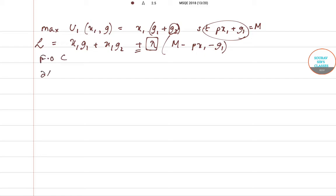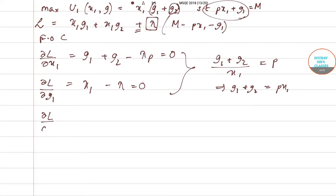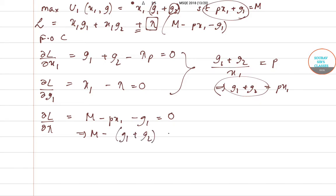The first order conditions are: ∂L/∂X1 = G1 + G2 − λP = 0, and ∂L/∂G1 = X1 − λ = 0. On simultaneously solving these two equations we get (G1 + G2)/X1 = P, so G1 + G2 = P·X1. On partially differentiating L with respect to λ we get M − P·X1 − G1 = 0. Substituting the value of P·X1, we get G1 + G2 − G1 = 0, which gives M = G1 + G2.